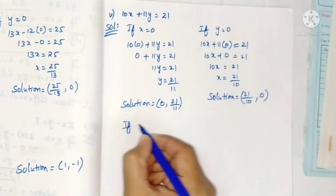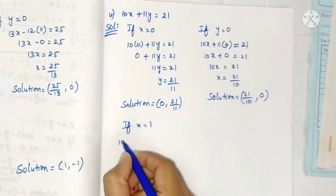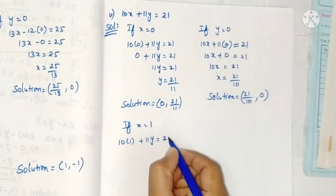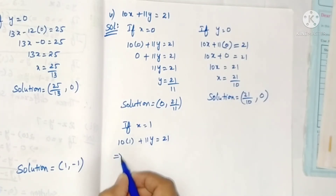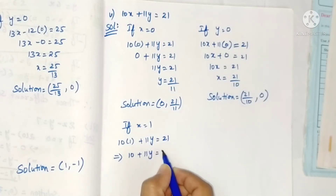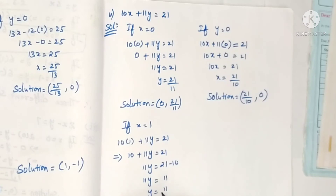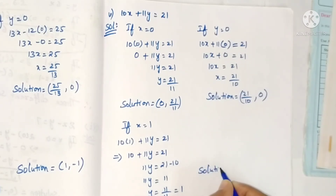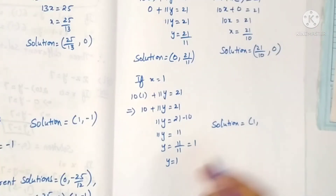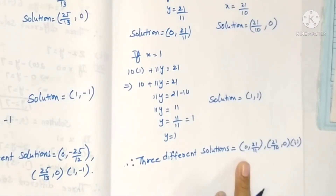Take x = 1: 10 into 1 plus 11y equals 21, so 10 plus 11y equals 21. Transposing: 11y equals 21 minus 10 equals 11. So y equals 11 by 11, that is 1. Solution is (1, 1). Therefore, three different solutions are (0, 21/11), (21/10, 0), and (1, 1).